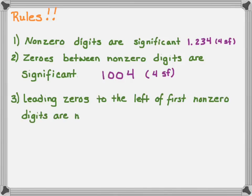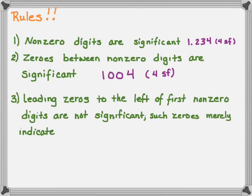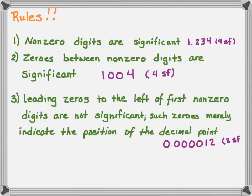Rule three: leading zeros to the left of the first non-zero digit are not significant. These are merely an indication of the position of the decimal point. So for the number 0.000012, those leading zeros are not significant — I only have two significant figures, which is the 1 and the 2, because all the zeros preceding them are merely placeholders.